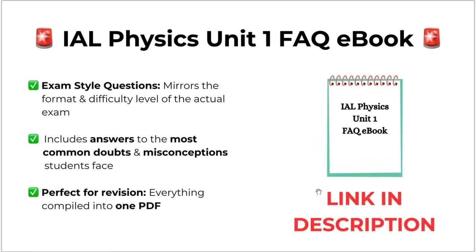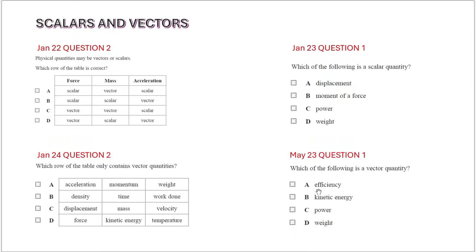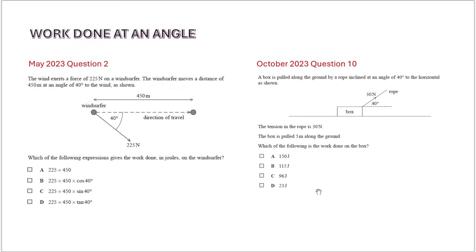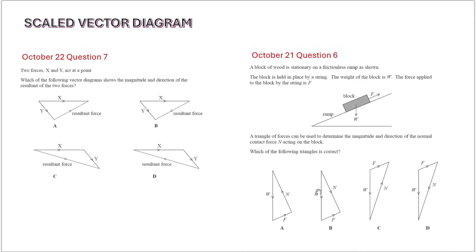The download link is given in the description below. Now let me just give you a glimpse of the common concepts that commonly arise in unit 1. So first you have scalars and vectors, then you have equations of motion, then work done at an angle.